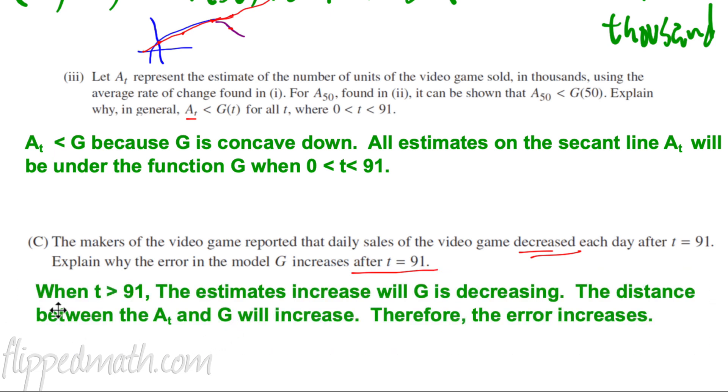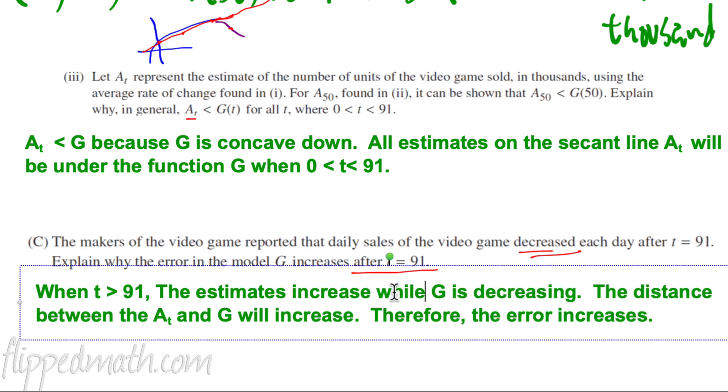So, we can kind of write that up. As T is greater than 91, the estimates increase. While G is decreasing, the distance between AT and G will increase. Therefore, the error increases. And that's, I think, the best we can do. That would get us a pretty good score right there.